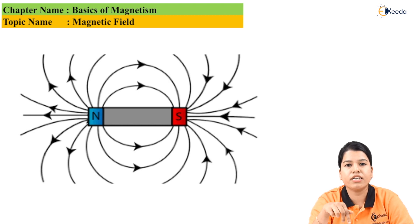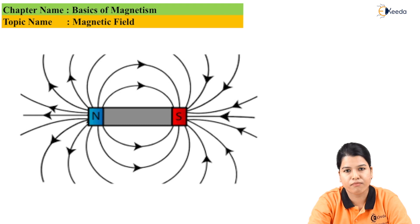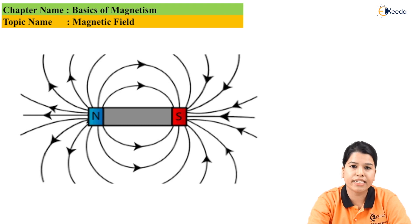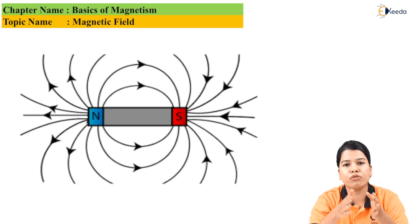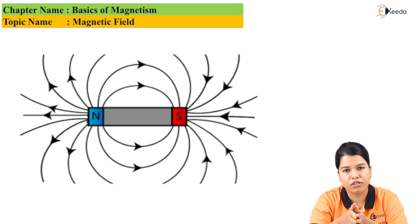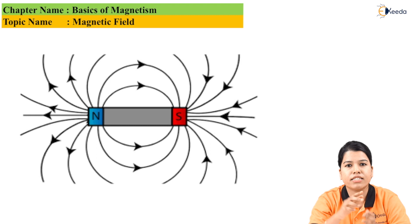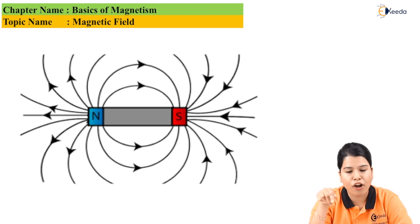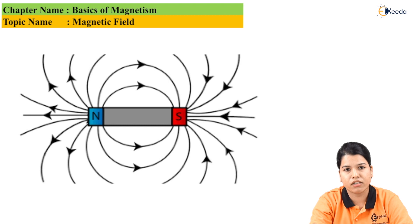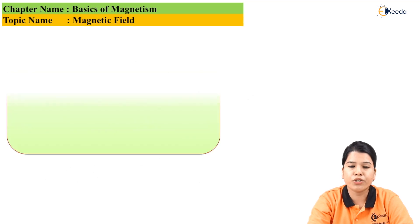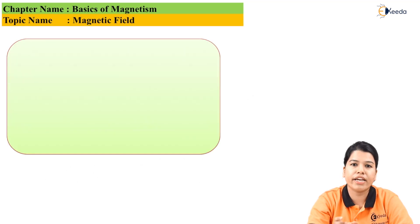This formation is nothing but the magnetic lines of forces. These magnetic lines of forces align themselves from the north pole to the south pole. It is also found that these lines of forces are continuous from the north pole to the south pole and also along the surface of the magnet.